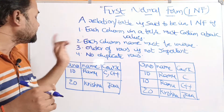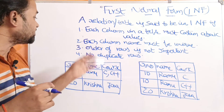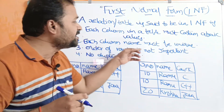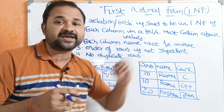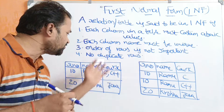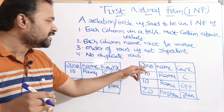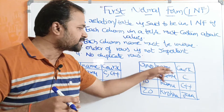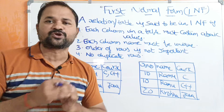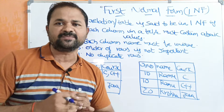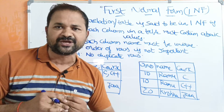The second condition is: each column name must be unique. If we observe the table, the column names are roll number, name, and course. All the column names are unique.